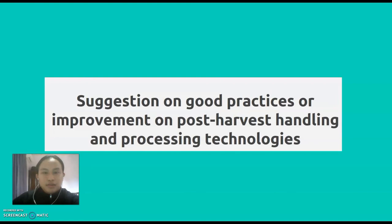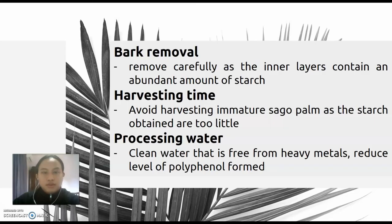Now I will talk about suggestions for good practices for improvement on post-harvest handling and processing technology. First is bark removal. Bark should be removed carefully and as finely as possible, as the inner layers still contain an abundant amount of starch. Usually the bark layer itself is less than 2.5 cm thick, although this also depends on the variety. Only care and attention by the barker can keep the starch loss to a reasonable minimum.